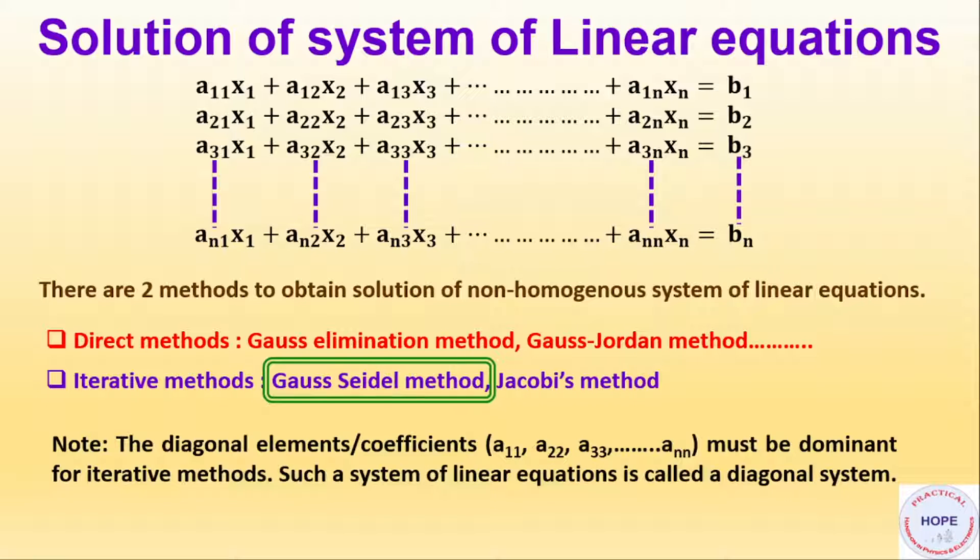Now it is important to note that the diagonal elements or the coefficients a11, a22, a33 till ann must be dominant for iterative methods. Then only the method will converge and give a correct solution. Such a system of linear equations where the diagonal elements are dominant is called a diagonal system.